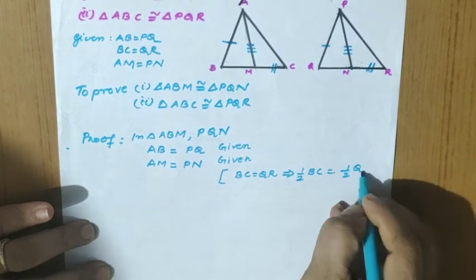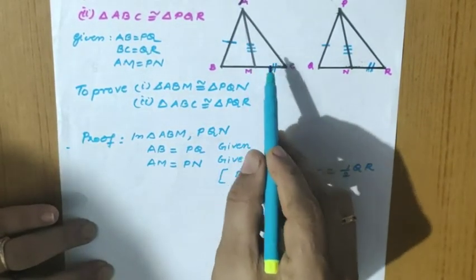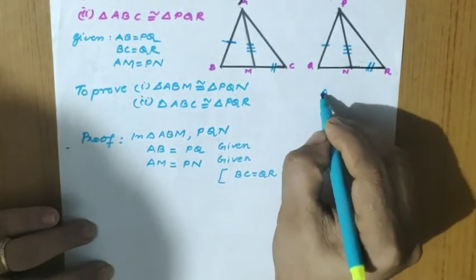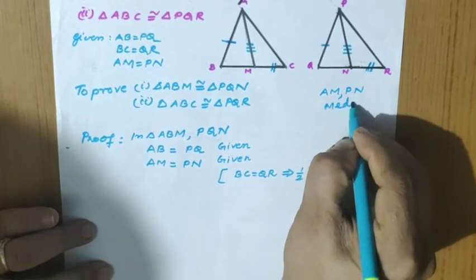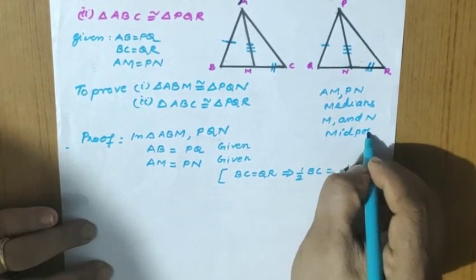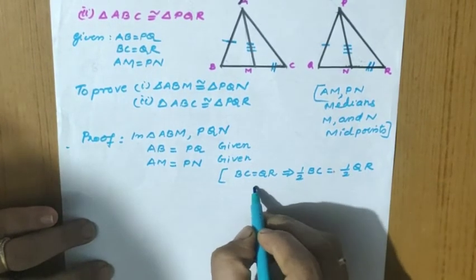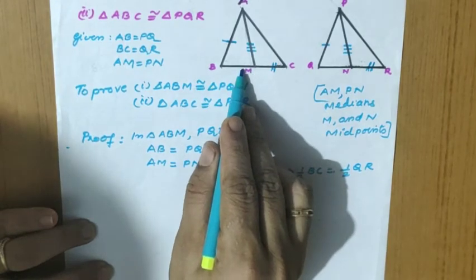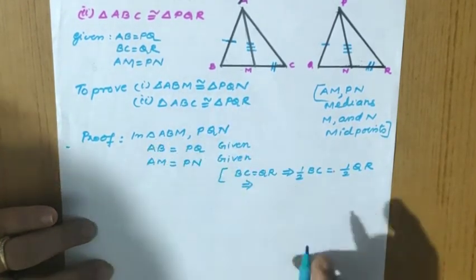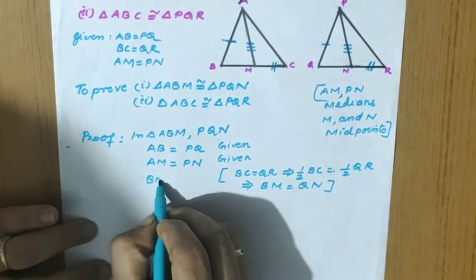We take half because AM and PN are medians, which means M and N are midpoints. Half of BC means either BM or MC; similarly QN or NR. We need BM because we are considering triangle ABM. So this implies BM equal to QN, giving us the third side.